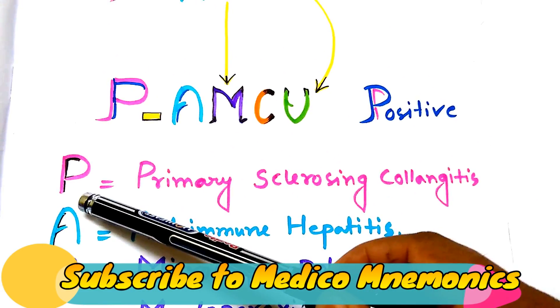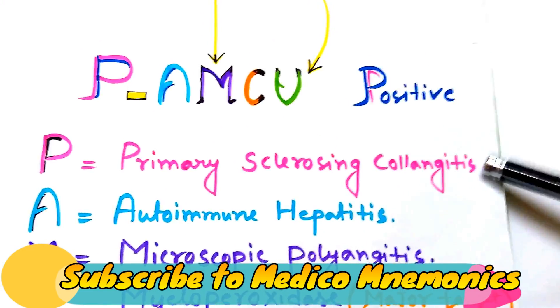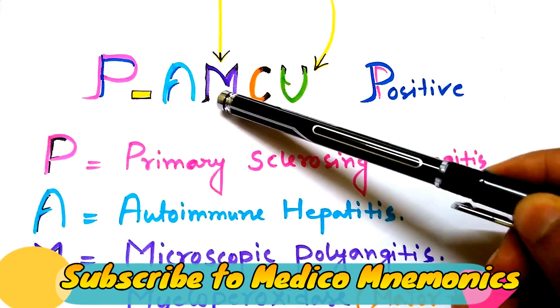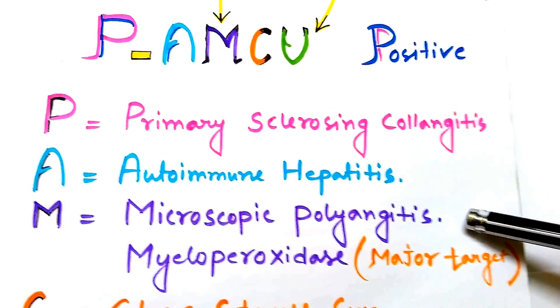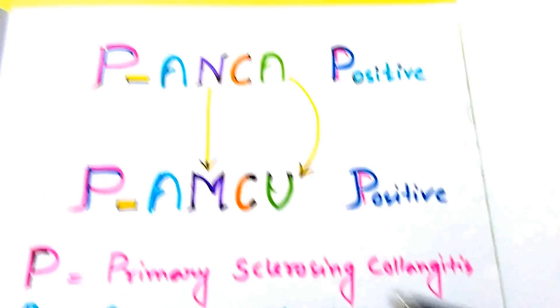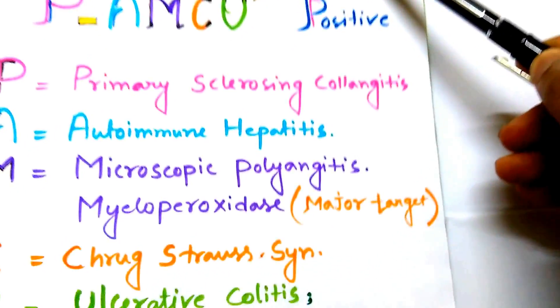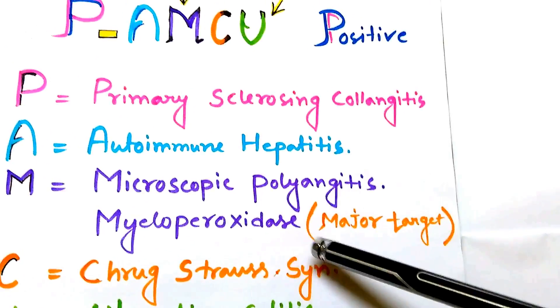For P you can find Primary Sclerosing Cholangitis. For A it is Autoimmune Hepatitis. For M there are two things: Microscopic Polyangitis, and also P-ANCA is directed against Myeloperoxidase, which is a major target of P-ANCA.